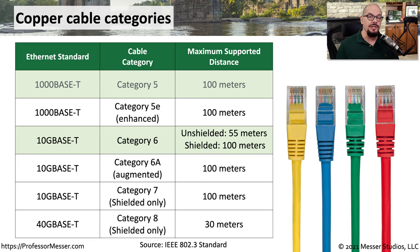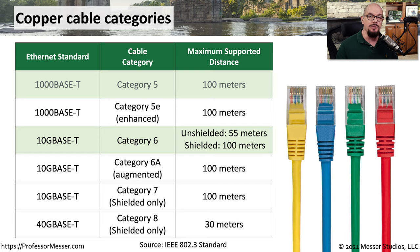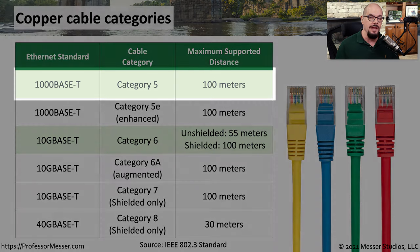There are different ways to construct twisted pair cabling, using different types of cables and different ways to manufacture the cable itself. These different characteristics of cables are called categories of cables, and we use these categories to determine what type of cable we would use for a different type of network.